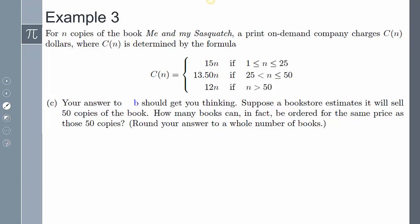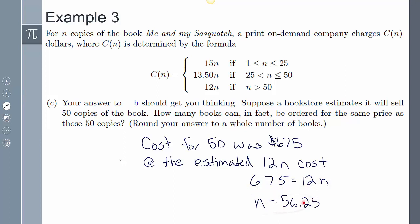So it says your answer B should get you thinking, which hey, it did. Interesting that suppose a bookstore estimates it will sell 50 copies of the book, how many books can in fact be ordered for the same price as those 50 copies. So referring to the fact that we know that it's going to cost for the 50 was $675. But what if we did it at this rate at that 12? So we're estimating at that 12n cost. So we have to say $675 equals 12n. Divide both sides by 12, n is going to give me 56.25. So therefore, I can say approximately 56 books. So maybe I should just order 51 books, because it's going to be cheaper. If that extra book sits on the stand there for a little longer, whoop-de-doo. But that should get you thinking. And even in other areas of life, you can consider buying in bulk might be cheaper than buying in smaller versions of it.